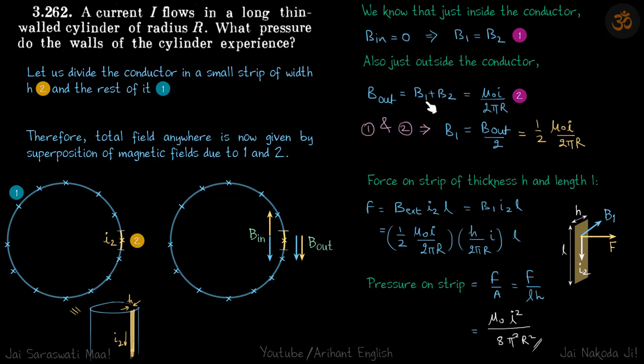Which means B_out = B₁ + B₂, and since B₁ = B₂, we get B₁ = B_out/2. The value of B_total is μ₀I/(2πr).